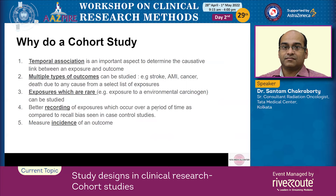Why do you want to do a cohort study? Because you want to determine whether there is a temporal association between exposure and outcome — specifically, whether the exposure precedes the outcome — which is a very important aspect of determining causation. Multiple types of outcomes can be studied: stroke, AMI, cancer, death due to any cause, or any other predefined outcome. This is one of the biggest strengths of the cohort study.